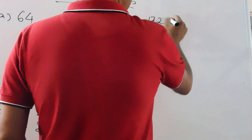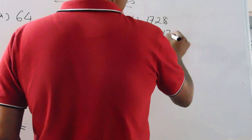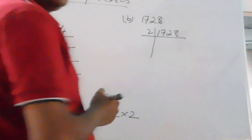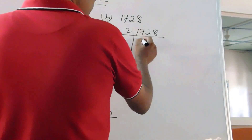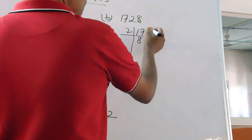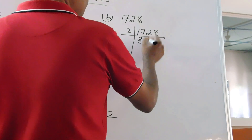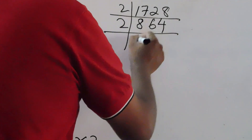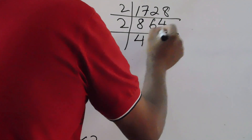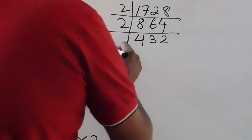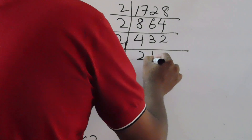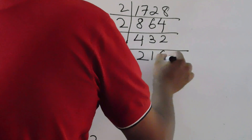Question number B: we have 1728. Since 1728 is an even number, divide by 2. Continuing to divide by 2 repeatedly: 1728 ÷ 2 = 864, ÷ 2 = 432, ÷ 2 = 216, ÷ 2 = 108, ÷ 2 = 54, ÷ 2 = 27. We get 27 after six divisions by 2.